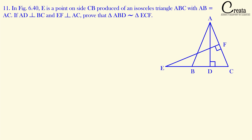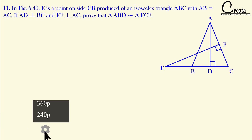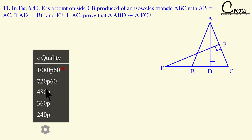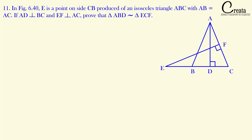Let's start with question number 11. In figure 6.40, E is a point on side CB produced of an isosceles triangle ABC with AB equal to AC. If AD is perpendicular to BC and EF is perpendicular to AC, prove that triangle ABD is similar to triangle ECF.